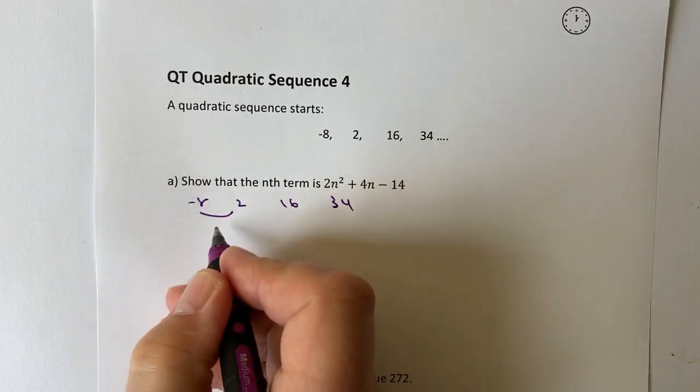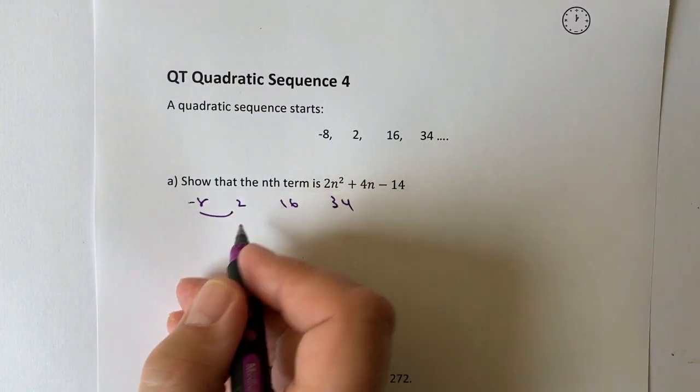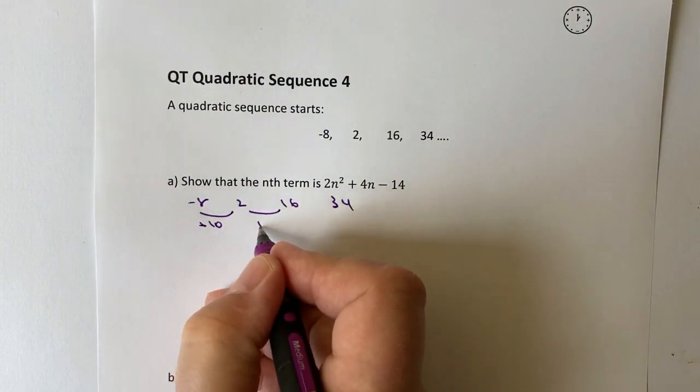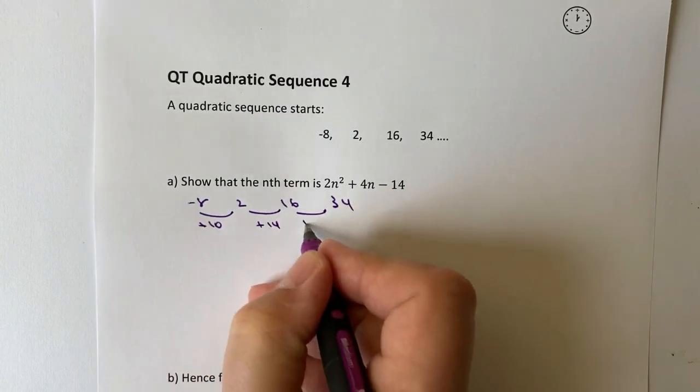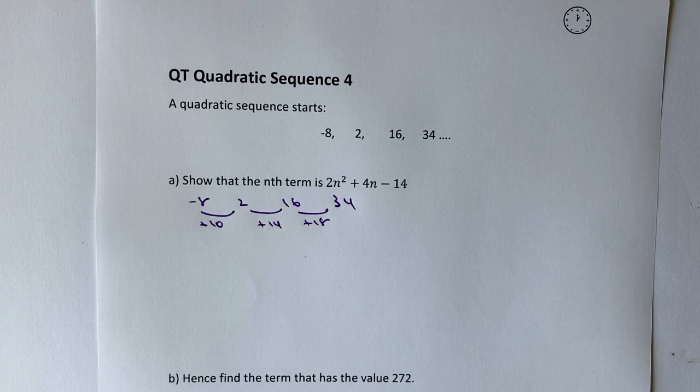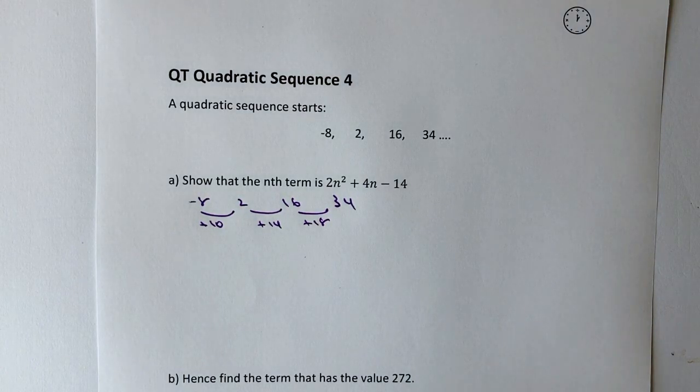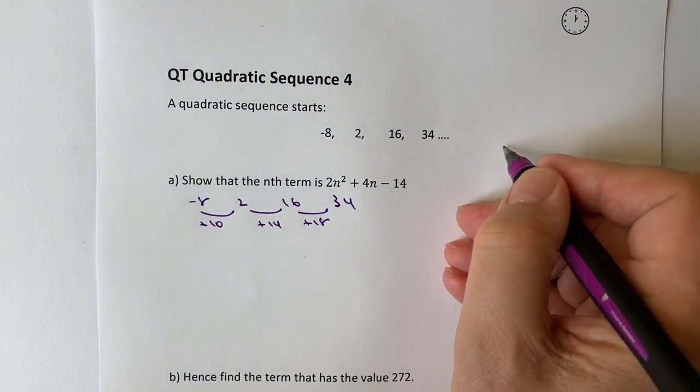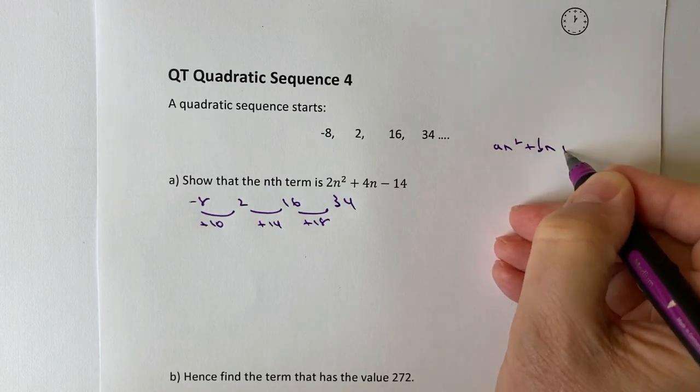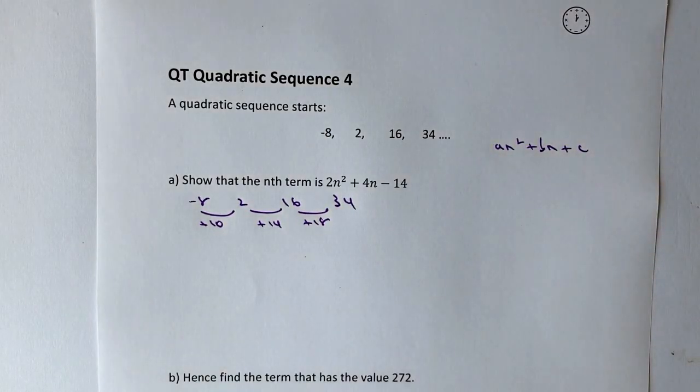The common difference between this and this, or the difference, is going to be positive 10, then positive 14, then positive 18. Therefore, it's not an arithmetic sequence. What we have to do is look at the second difference in order to figure out how we can write this in the quadratic form, which is an² plus bn plus c.